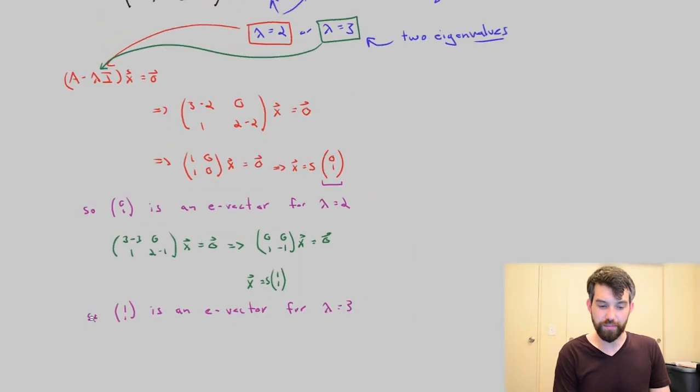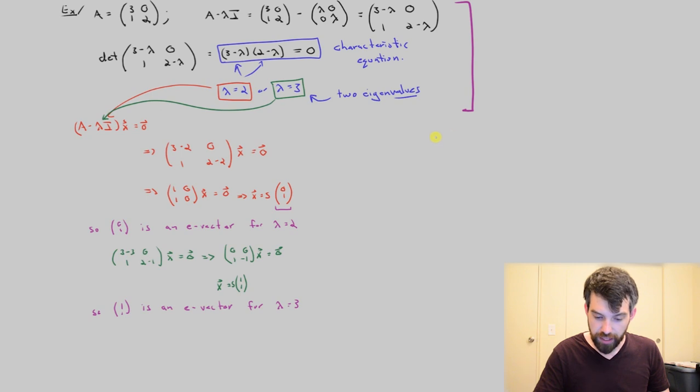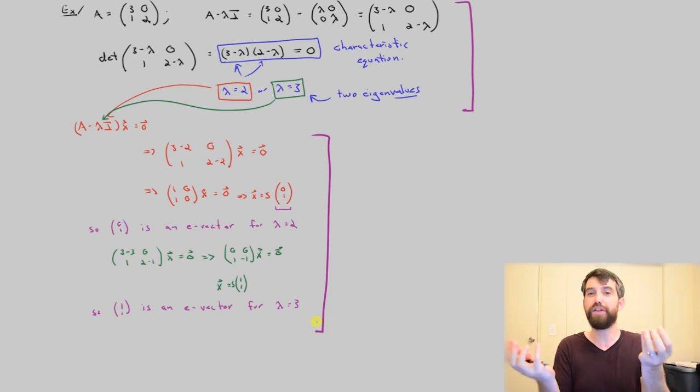So if I go back and look at the entire process here, there were two major phases. Step 1 was using the determinant to figure out what the eigenvalues were. And then phase 2, it was coming along here and figuring out corresponding eigenvectors by plugging each of the different eigenvalues into this formula.